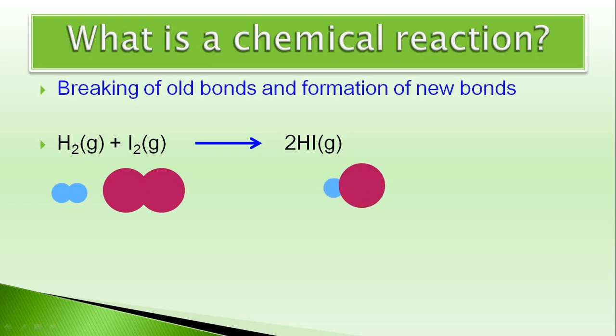These two react to form two molecules of HI. What really happens during the course of this reaction is breaking of bond present between two hydrogen atoms and breaking of bond present between two iodine atoms and formation of new bonds between a hydrogen atom and an iodine atom. It leads to formation of two molecules of HI. During the course of this reaction, since old bonds are broken and some new bonds are formed, it can be called as a chemical reaction.